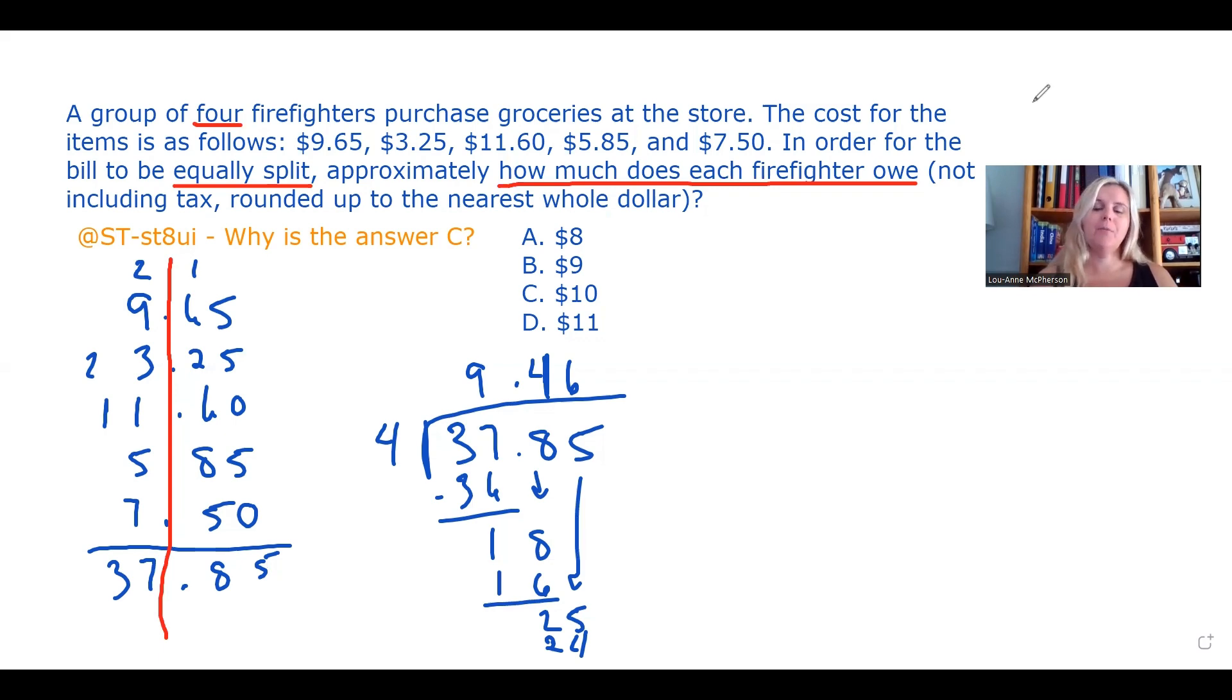In general, the rule with rounding is you're going to look at the first number to the right of the decimal and if that number is five or greater, you're going to round the whole number up. And I think this is where the confusion lies because it says that the answer is C. But if we followed that general rule, the answer would be nine.